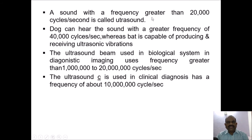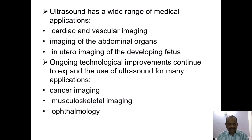A sound with frequency greater than 20,000 cycles per second is called ultrasonic. Dogs can hear sound with frequency greater than 40,000 cycles per second, while bats are capable of producing and receiving ultrasonic vibrations. The ultrasound beam used in biological systems and diagnostic imaging uses frequencies greater than 1 million to 20 million cycles per second. Ultrasound has a wide range of medical applications: cardiac and vascular imaging, imaging of abdominal organs, and in utero imaging of the developing fetus. Ongoing improvements continue to expand its use in cancer imaging, musculoskeletal imaging, and ophthalmology.